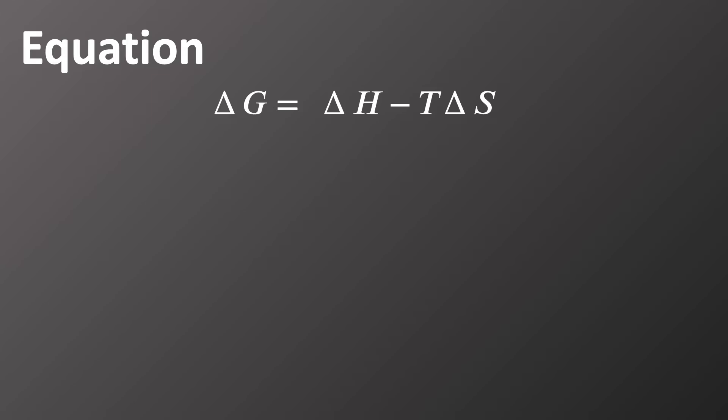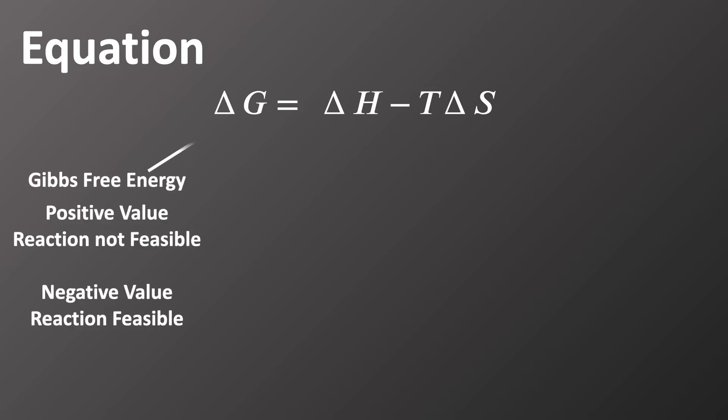If we look at this equation in detail, delta G is what we're most interested in. If delta G is a positive value, then the reaction is not feasible. If delta G is a negative value, the reaction is feasible. This is one of the key things that you need to remember from this episode.